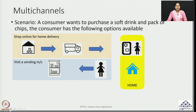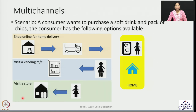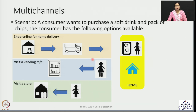The third option is to actually visit a brick and mortar store, pick out the items — the soft drink and pack of chips — make the purchase, and leave. As we can observe, these are multiple channels available for the consumer to choose from according to preferences, convenience, and interest, and the consumer may choose differently at different points in time.